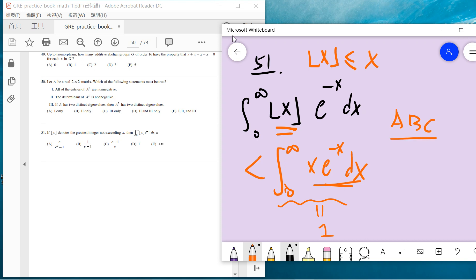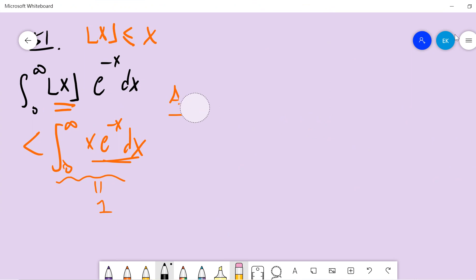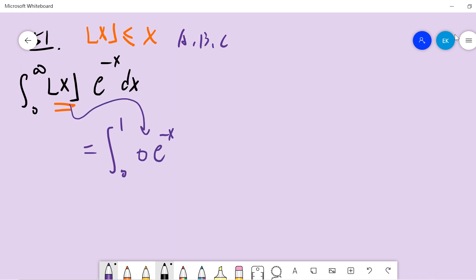Now we know we have three choices: a, b, or c. We can do the integration by parts. From 0 to 1, floor of x is 0, then for 1 to 2, floor of x is 1, and then this is 2.